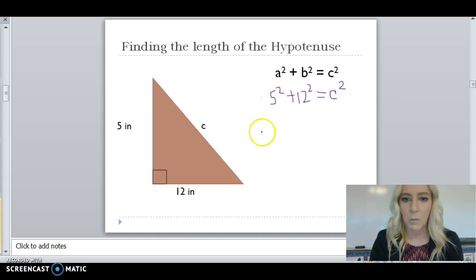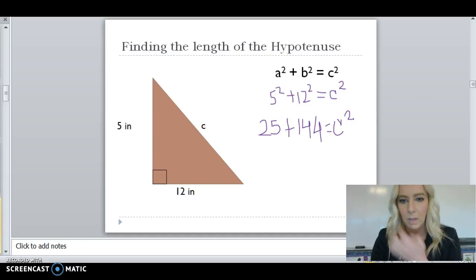So 5 squared is 25, and you can use your calculator for this computation, plus 12 squared, which is 144, equals C squared. Well, if I add 25 plus 144, that equals 169, which equals C squared.